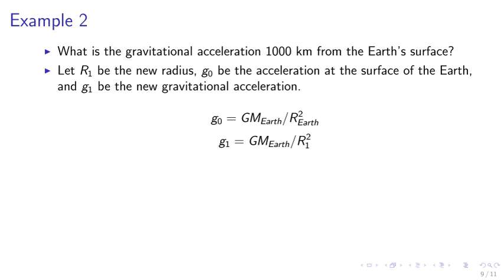Let r1 be the new radius, g0 be the acceleration at the Earth's surface, and g1 be the new gravitational acceleration. g0 equals G m_Earth over r_Earth squared. g1 equals G m_Earth over r1 squared.